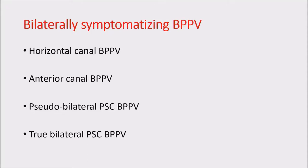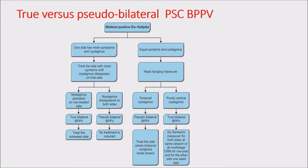Bilaterally symptomatic BPPV: horizontal canal BPPV gives symptoms on both right and left, and anterior canal BPPV also gives symptoms on both sides, producing a positive Dix-Hallpike with vertical nystagmus on both sides. The torsional component will be downbeating toward the affected ear. There is also pseudo-bilateral posterior canal BPPV and true bilateral BPPV. In our clinic we have a rapid-access clinic seeing many patients from the emergency department, and as a tertiary care hospital we see many head trauma cases, which explains our higher rates of multiple canal and bilateral BPPV.